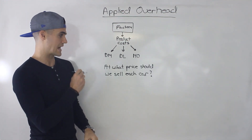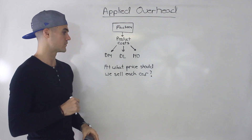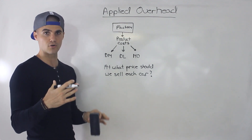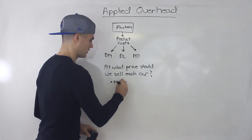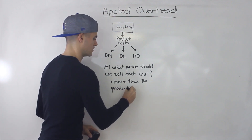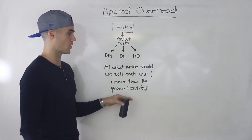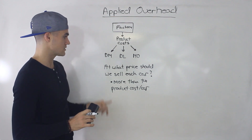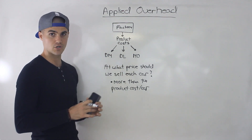An interesting question I want to ask is: at what price should we sell each car? Let's pretend that in this factory we're only making one type of car. Well, we definitely want to sell it at a price where we're going to make a profit in order for our company to survive. So we have to sell it for more than the product cost per car — the direct material, the direct labor, the manufacturing overhead per car.